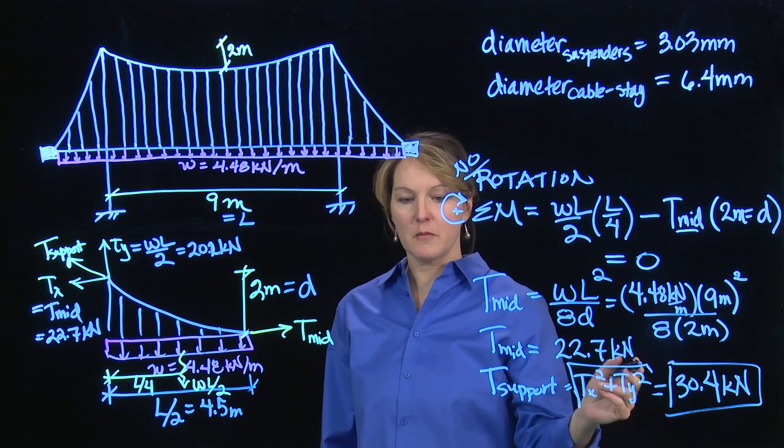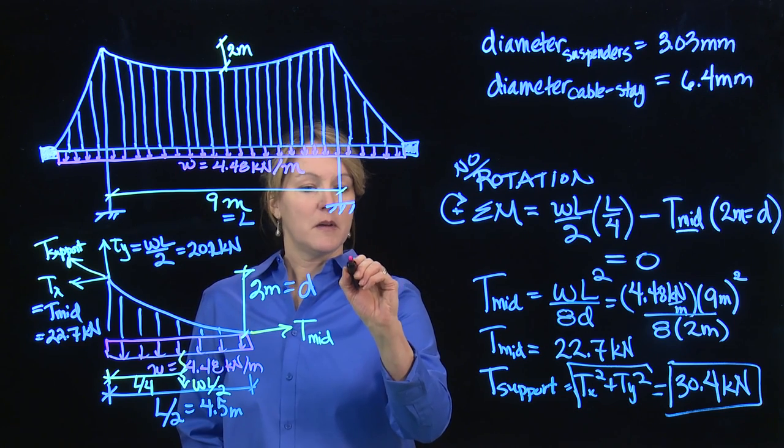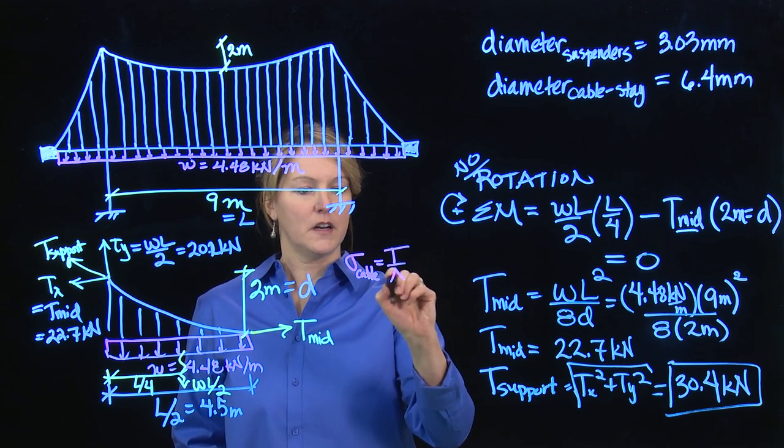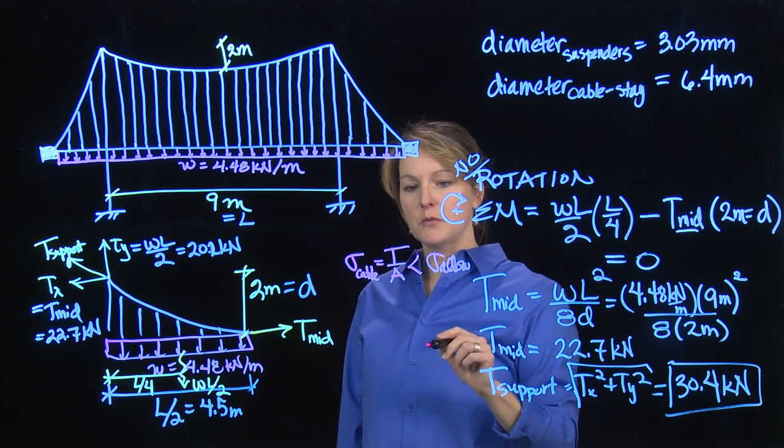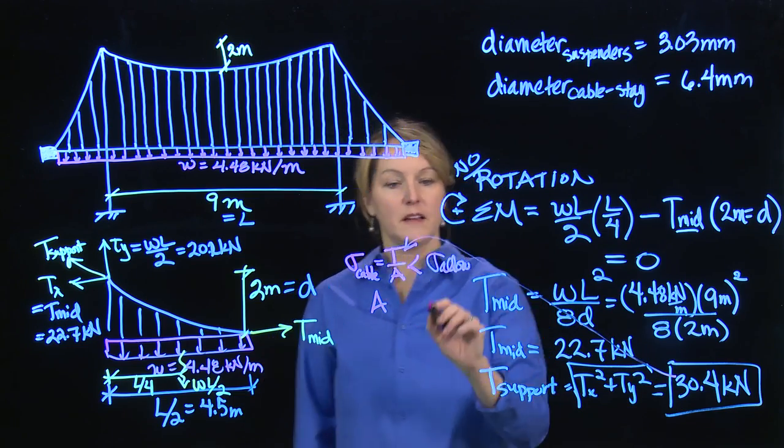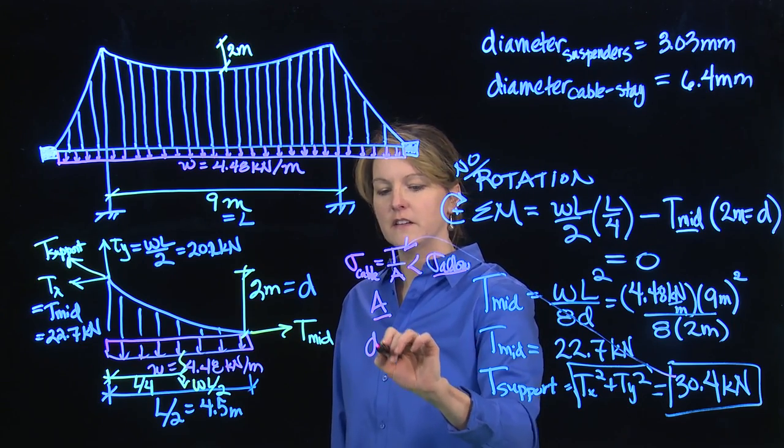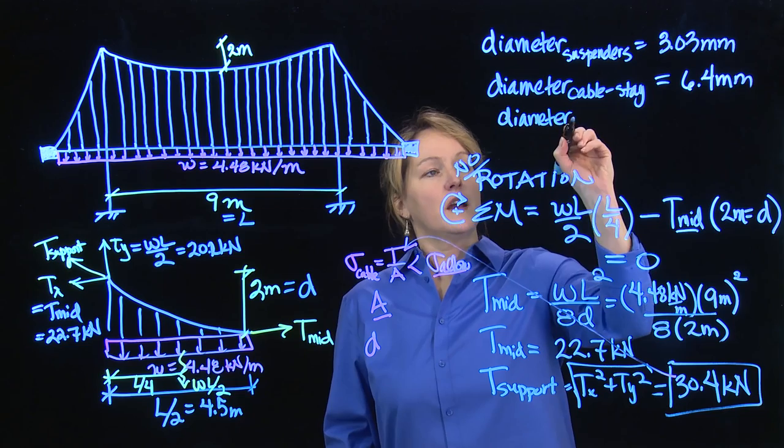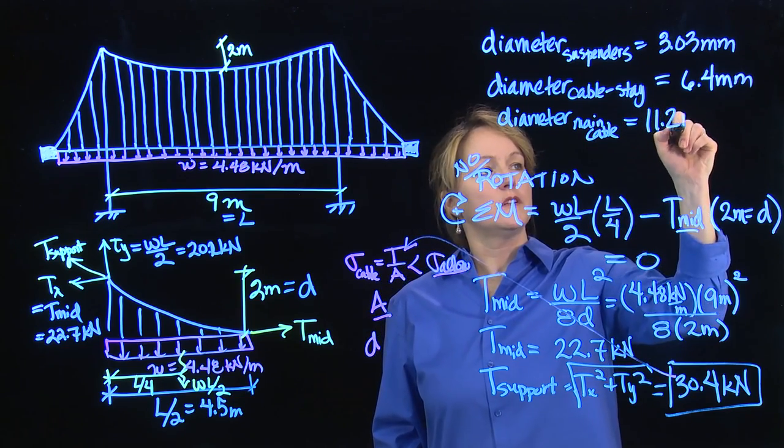If I wanted to calculate the diameter, I would again use my equation. I'll use a different color so we can see it in the middle. I can calculate the stress in the cable. We've done this one before, but it is force over area and keep that less than the allowable stress. I use the same allowable stress that I use for the cable stay bridge. We can solve for the cross-sectional area, putting in this 30.4 for T. And my allowable stress was 310,850 kilonewtons per meter squared. I can solve for area and then I can solve for diameter. The diameter of these main cables, if you do that, the main cables of the suspension bridge ends up being 11.2 millimeters.